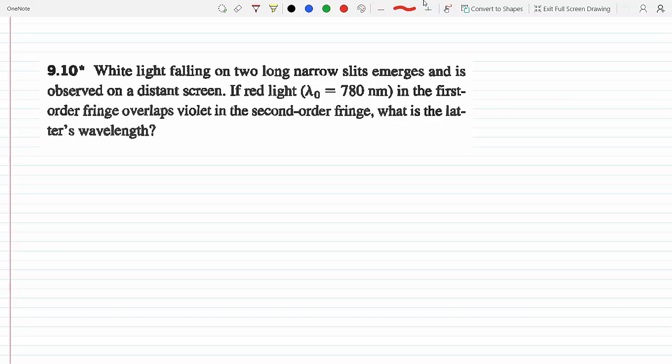So white light falling on two long narrow slits emerges and is observed on a distant screen. Red light with wavelength 780 nm in the first order fringe overlaps violet in the second order fringe.